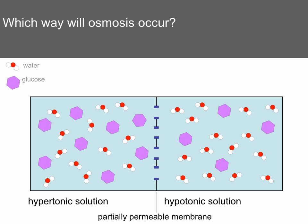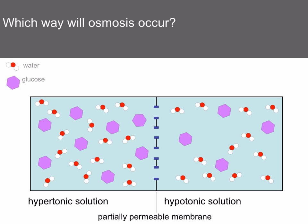Which way will osmosis occur? Looking at the diagram, you've got a hypertonic solution and a hypotonic solution. Watch the water molecules — they are moving from hypotonic to hypertonic. So the net movement of water will be from the hypotonic to the hypertonic solution.